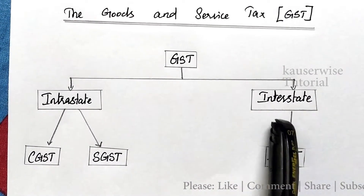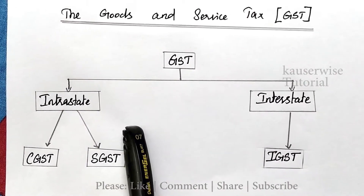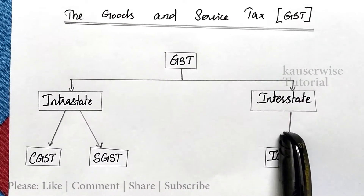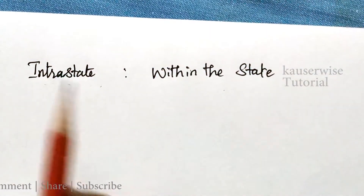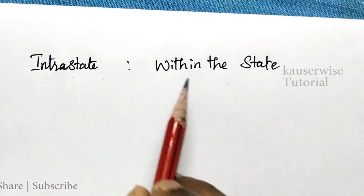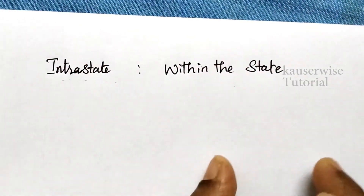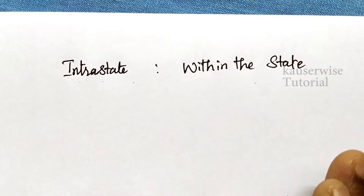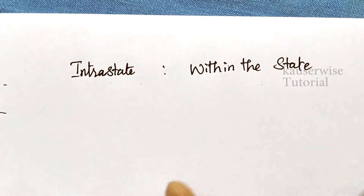Intrastate means within the state — a transaction taking place within the same state, where both buyer and seller belong to the same state. Interstate means a transaction taking place between two different states. For example, assume you are going to buy some goods and services from a supplier, and both the purchaser and seller belong to the same state — that falls under intrastate.